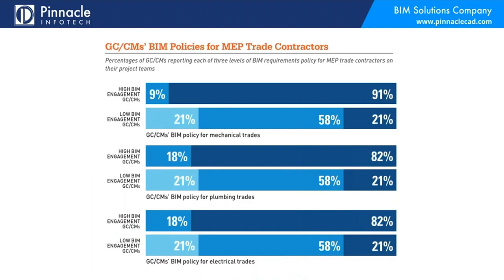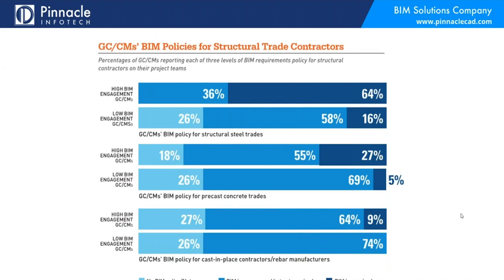Similarly, GCs can put policy in place requiring trades to come ready to play BIM. The top lines — mechanical and plumbing — show that among GCs in the deep end of the pool, 91 percent and 82 percent respectively are insisting on BIM readiness as an absolute requirement. For electrical it's also strong. The middle blue encourages it without mandating, and hopefully the dark blue keeps getting bigger while the light blue gets smaller as we revisit this in the future.